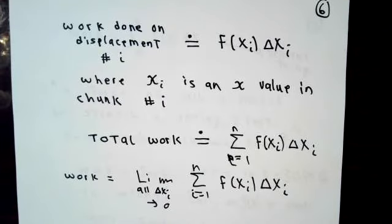The work done over this chunk number i, then, is approximately going to equal force on chunk number i multiplied by how big chunk number i is. The total work is the sum of all of those estimates, roughly speaking.